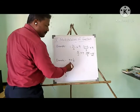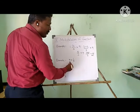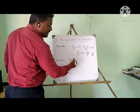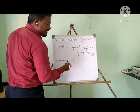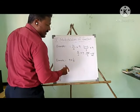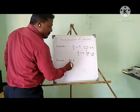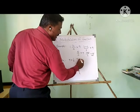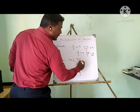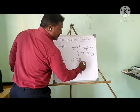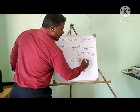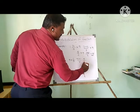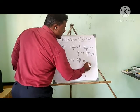If you take another example: here the whole number is on this side and the fraction is on the other side. Simply multiply 9 × 1 upon 7. So 9/7 is the answer.